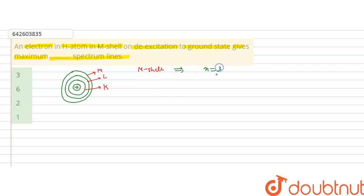3. So when the electron is present in n equals 3 and it de-excites to n equals 1, it means n1 equals 1 and n2 equals 3. So now we have to find out the number of spectral lines which are produced.